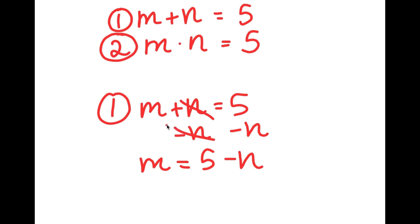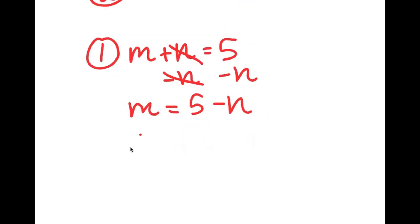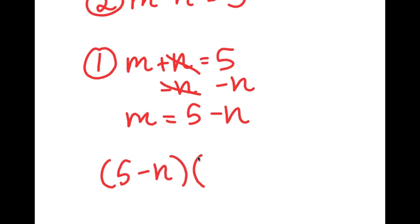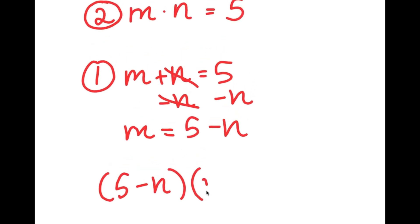The reason I did this is because I can substitute this value of m back into my original equation. So if I substitute this back in, I get 5 minus n times n is equal to 5.